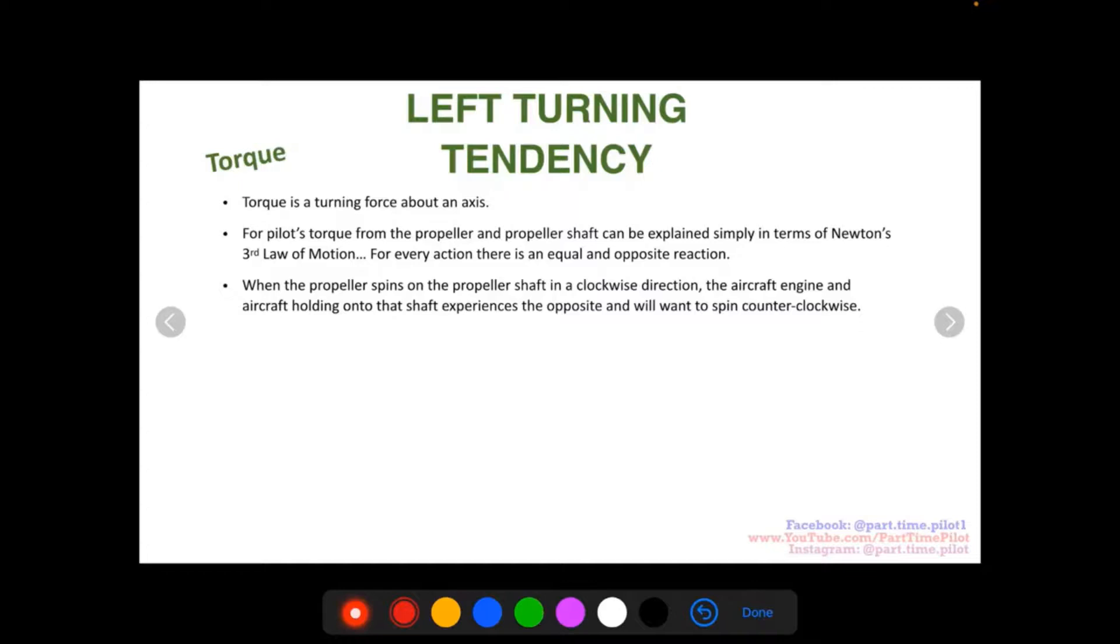And the engine is spinning that shaft. And then the aircraft is holding onto that engine. You know, the engine is bolted to the aircraft. So that's all one piece. The aircraft and the engine are one piece and they're holding onto that shaft. And as that shaft spins, it's going to spin one direction.